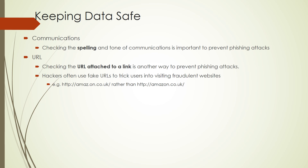Next is communication safety. Check the spellings and tone of communications — check the URLs to verify they are the original ones and not fraudulent websites. For example, two website links may look the same but one is original and the other is fake. You have to make sure you are using the original link rather than fraudulent links.